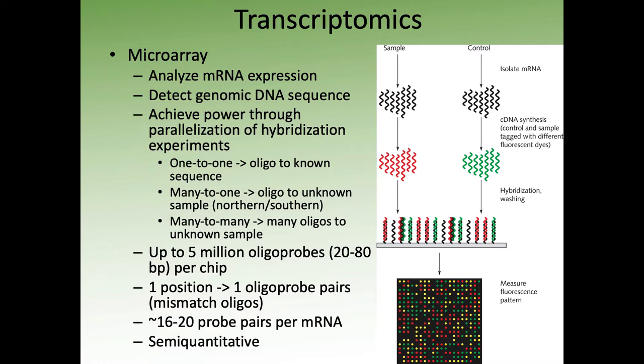Thinking about how these technologies work: microarrays can be used for other types of technology, but typically we use them either to analyze mRNA expression or to detect DNA sequence variants. Companies like 23andMe typically use large DNA variant microarrays for their DNA sequencing. For gene expression, we use the same sort of probe system — it's essentially a highly parallelized hybridization experiment. You have this chip with all of these oligos attached to it, and you look to see how much of your unknown sample binds to it.